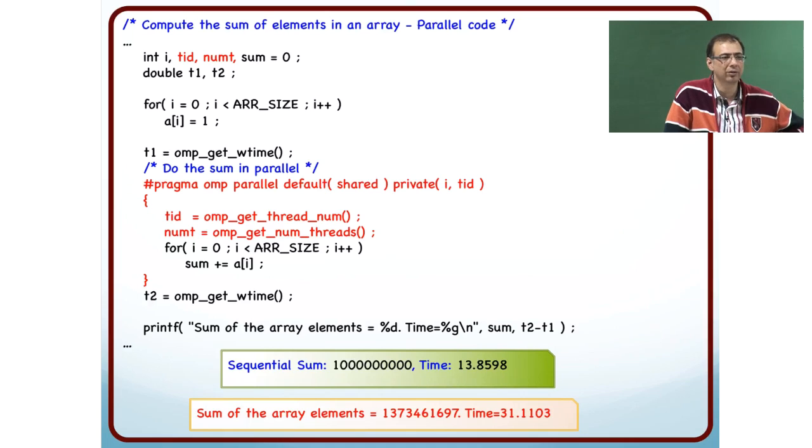This is where cache coherency comes in. These four processes, they have their own cache and these variables, particularly the variable sum. It is in the cache.